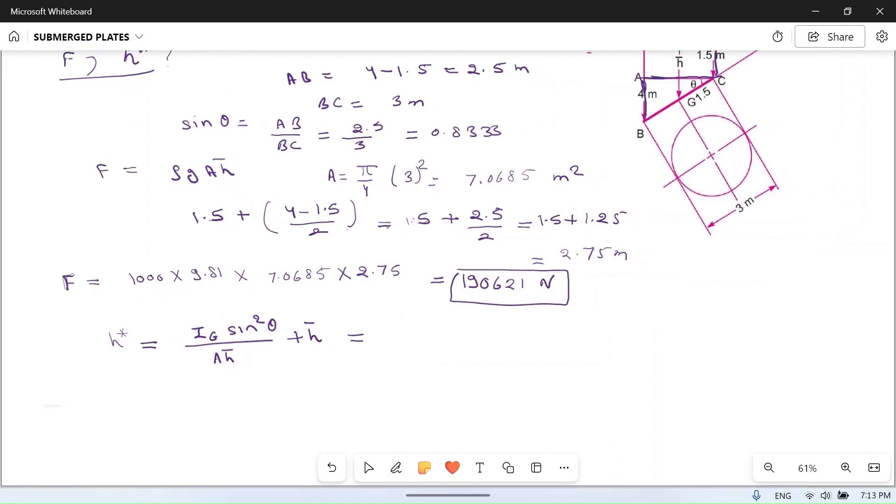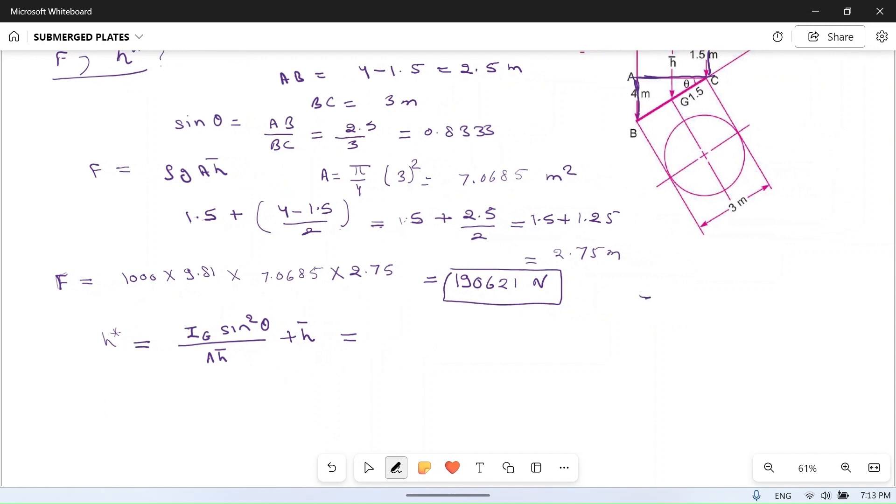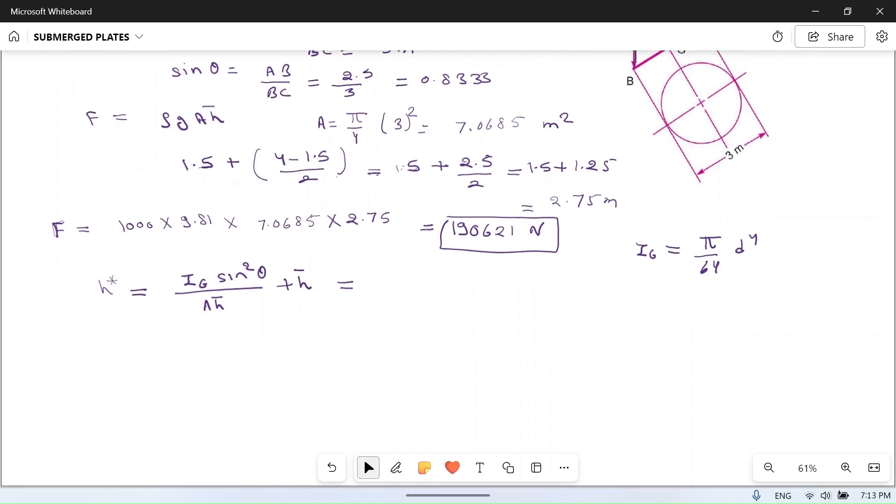Ig for circle, moment of inertia, is pi by 64 d to the power 4. For this, it will be pi by 64 into d is 3, so 3 to the power 4.